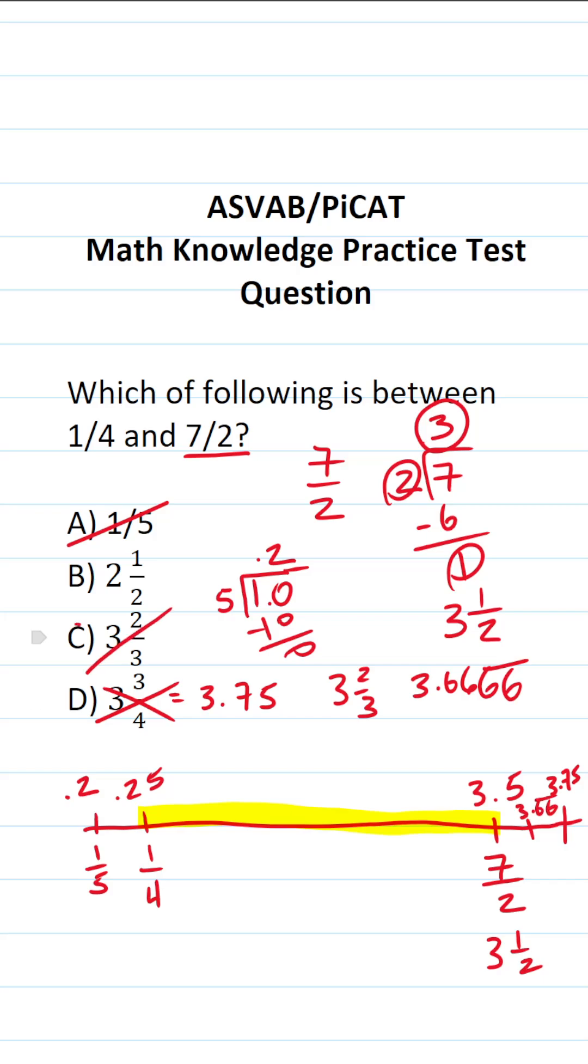What about 2 and a half? 2 and a half is somewhere right here. That's the same thing as 2.5. And you could see that that is in fact between 0.25 and 3.5, or 1/4 and 7/2.